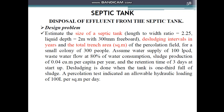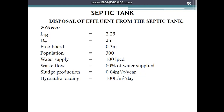We are required to calculate: size of the septic tank, desludging interval in years, and the total trench area. Given: L/B = 2.25, depth of wastewater Dw = 2 meters, freeboard = 0.3 meters, population = 300, water supply = 100 liters per capita per day, wastewater flow = 80% of water supplied, sludge production = 0.04 m³ per capita per year, and hydraulic loading = 100 liters per square meter per day.